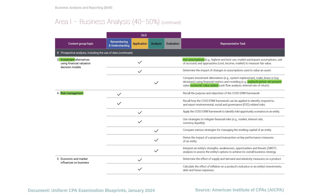From there we go into risk management, which is really focused on the COSO Enterprise Risk Management framework. It covers how we can respond to environmental, social, and governance-related risks, different risks and opportunities, the different types of risks, strategies for mitigating those risks, and performing a SWOT analysis of a company.